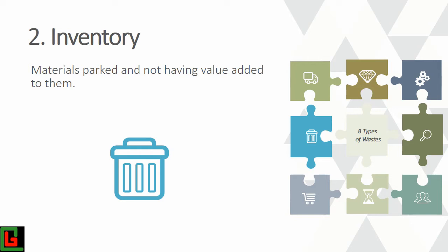Inventory also includes finished products ready for shipment but not yet paid for by the client. In all these cases, your cash is tied up in inventory, meaning you have less cash available for other activities. The cost of inventory also includes the rent and cost of the warehouse needed to store it.